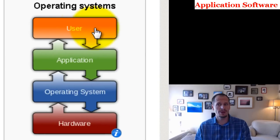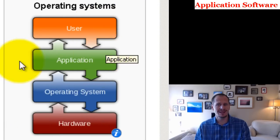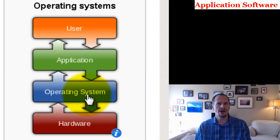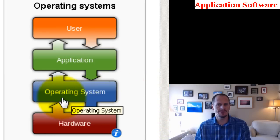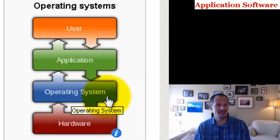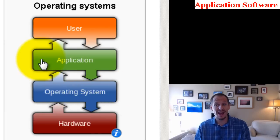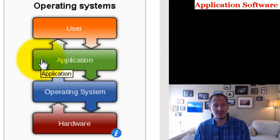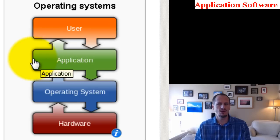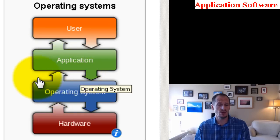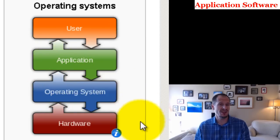It's also important to remember where application software sits in this diagram. We've got the hardware, then the operating system that's written for specific hardware — specifically for specific CPUs with specific instruction sets. Then application software has to be written for specific operating systems that were written for specific hardware.